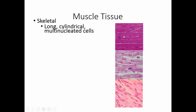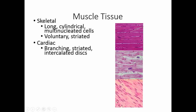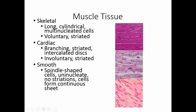Skeletal muscle has long cylindrical cells with little stripes. Because we consciously control the movement of these muscles, it's called voluntary muscle, and the stripes make it striated muscle. Cardiac muscle has branching cells — it's also striated with visible stripes — and is held together by special structures called intercalated discs, those extra heavy stripes. We can't control cardiac muscle contraction, so it's involuntary but striated. Smooth muscle fibers are spindle-shaped, form sheets of muscle, are called smooth because they have no striations, and are involuntary.